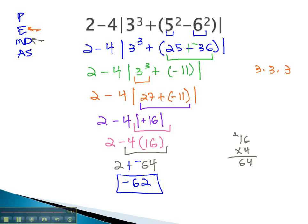As you can see with absolute value, we need to simplify inside the absolute value first, because it's a parentheses. Once we've simplified inside, we make it positive, and then continue with the problem.